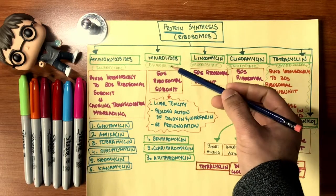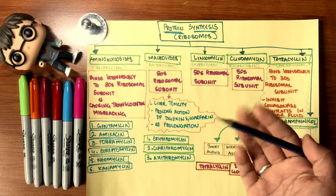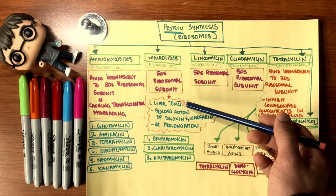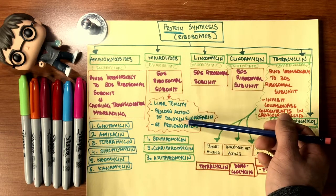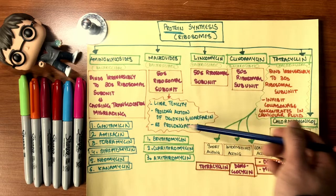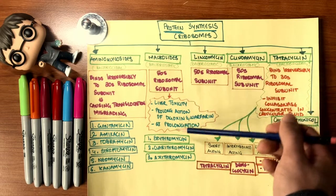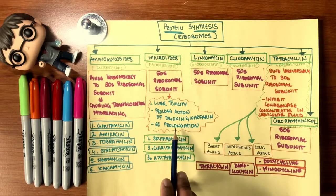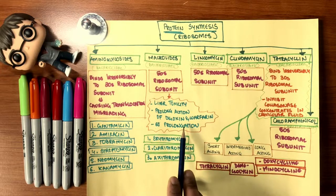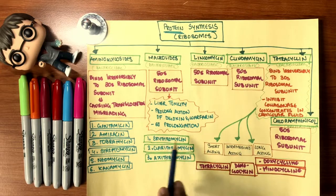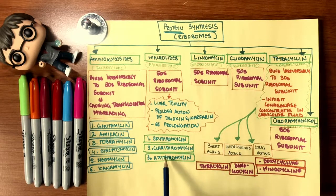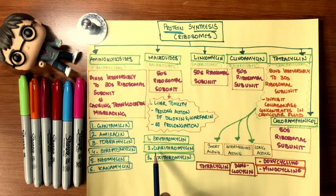The macrolides are bacteriostatic, which means they do not kill the bacteria; they stop their replication. They bind to 50S ribosomal subunits. They do cause liver toxicity. They prolong the actions of digoxin and warfarin because these drugs do metabolize in the liver, and also it does increase the QT duration of the ECG, which means that it does have a longer length of a beat of a heart. Erythromycin, clarithromycin, and azithromycin are strong, very risky drugs, and they are placed in order of preference where erythromycin is least preferred, clarithromycin is okay, and azithromycin is best out of the three.